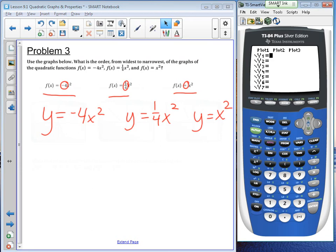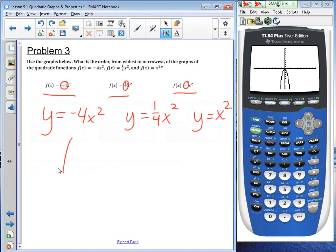So, I'll start with the first function, negative 4x to the second power. And when I graph it, what you should notice is, it's pretty skinny, and it's opening down.